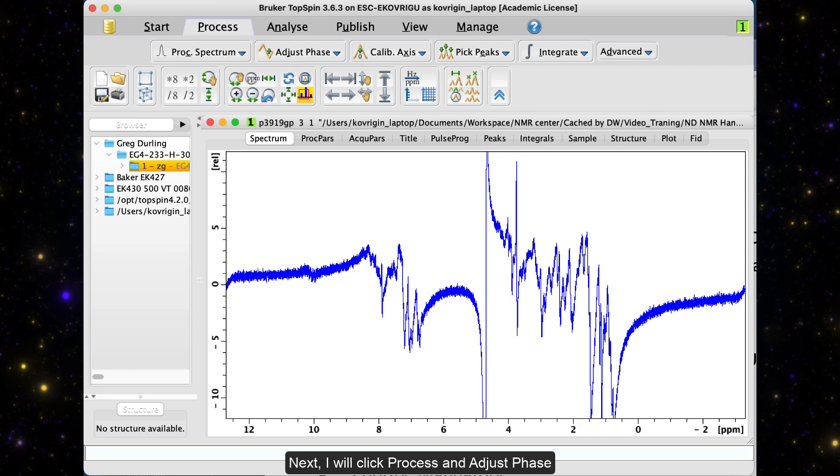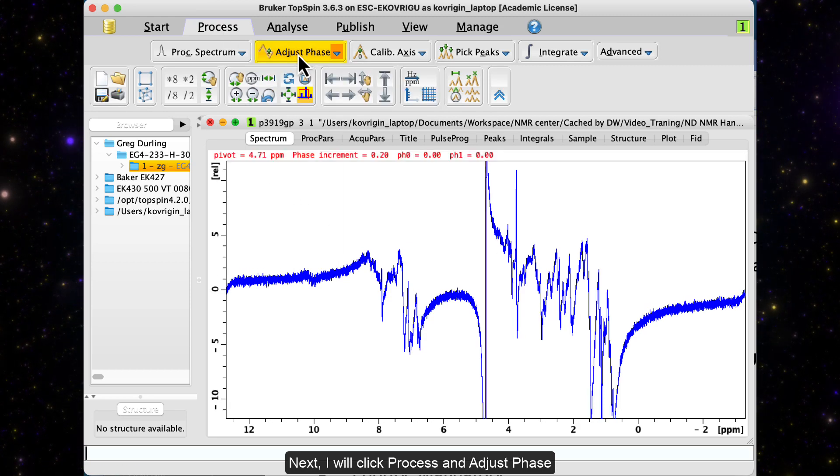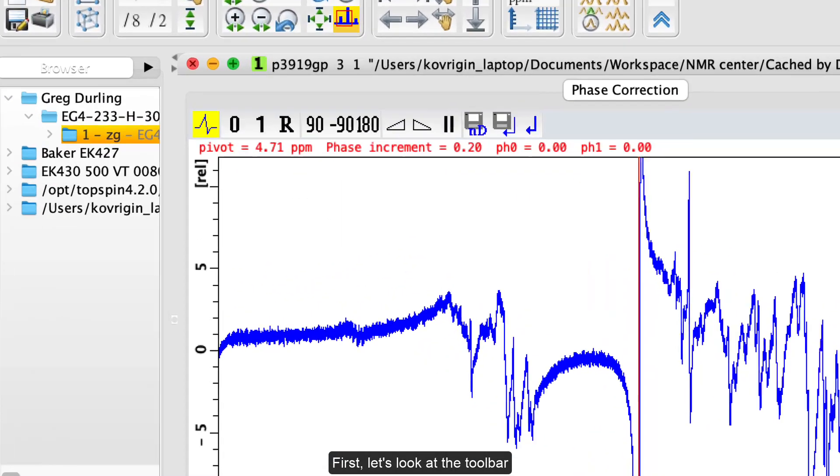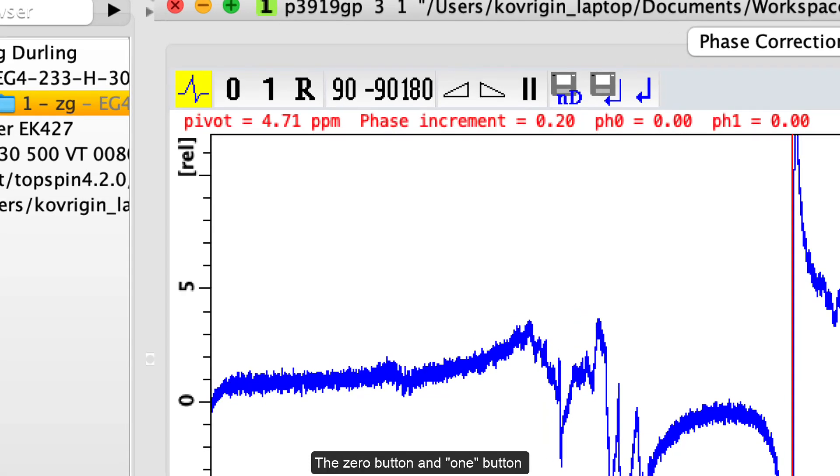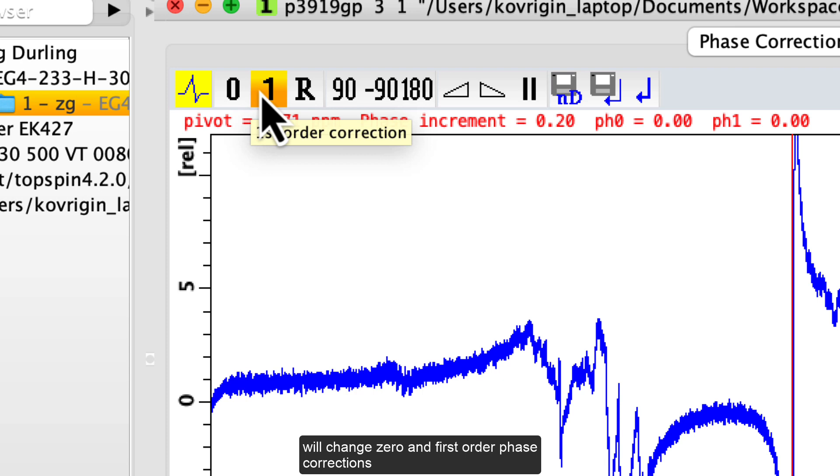Next, I will click process and adjust phase. First, let's look at the toolbar. The 0 button and 1 button will change zero and first order phase corrections.